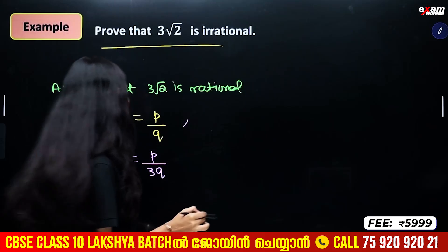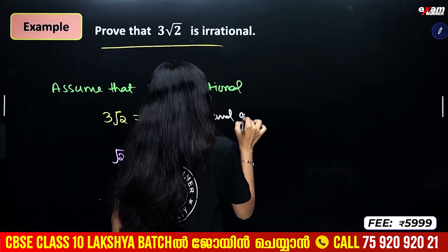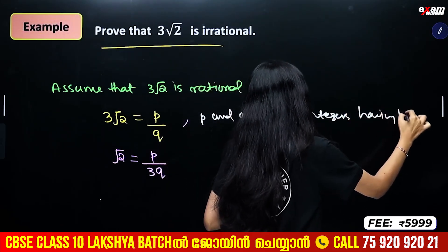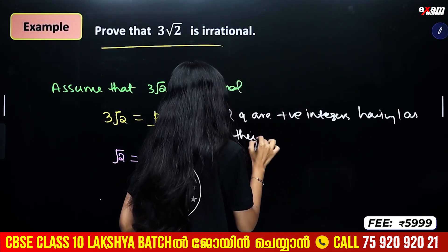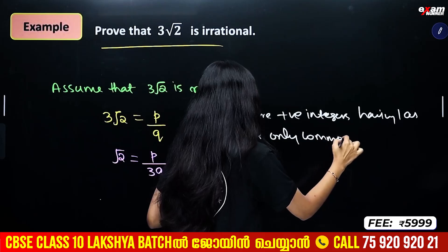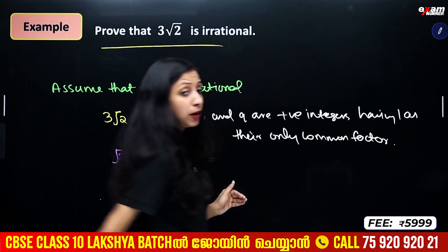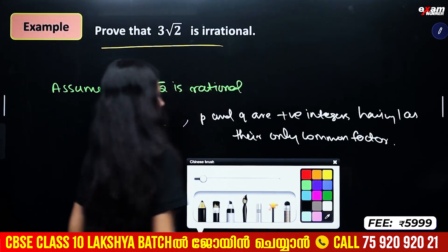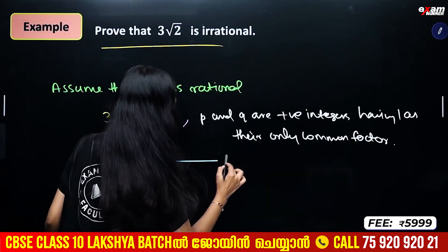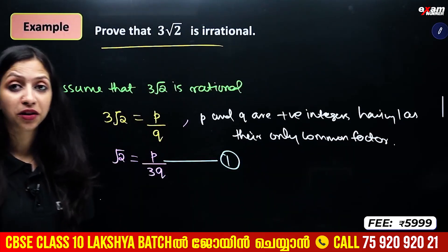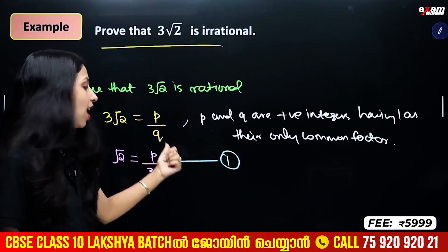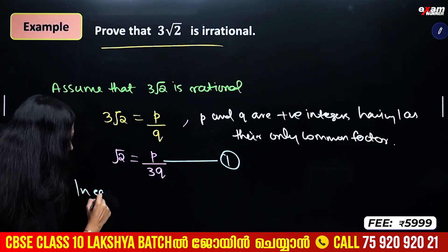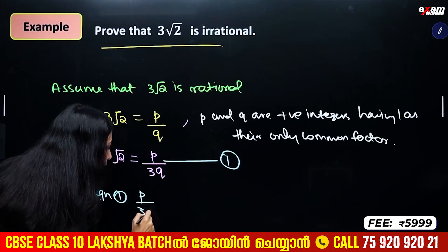P and Q are positive integers having one as their only common factor. So root 2 equals P by 3Q. The right-hand side P by 3Q is rational, since P and Q are positive integers multiplied by 3.